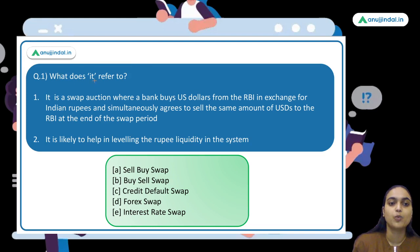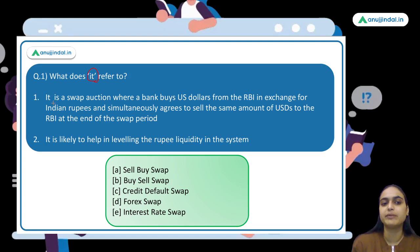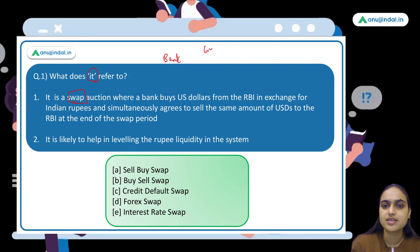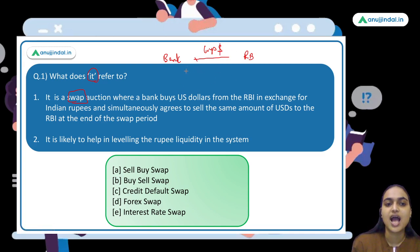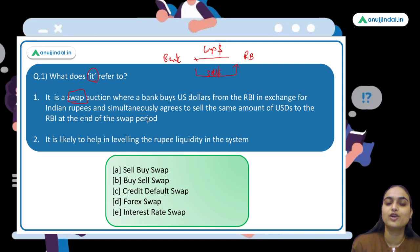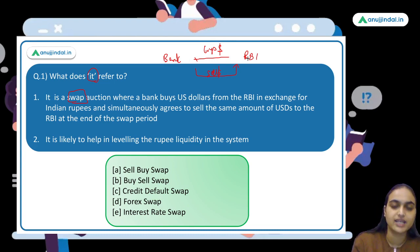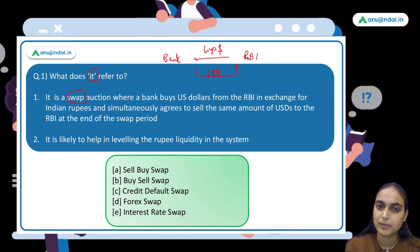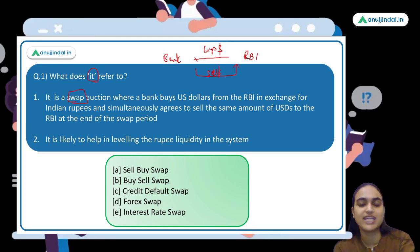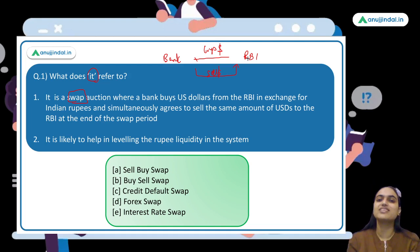The first question asks: what does it refer to? We have two statements and we have to identify the concept being discussed. The first statement says it is a swap auction where a bank buys US dollars from RBI in exchange for Indian rupee, and simultaneously agrees to sell the same amount of US dollars back to RBI at the end of the swap period.